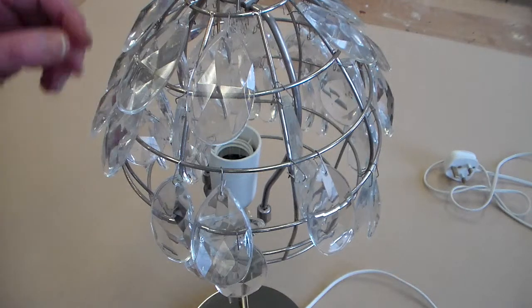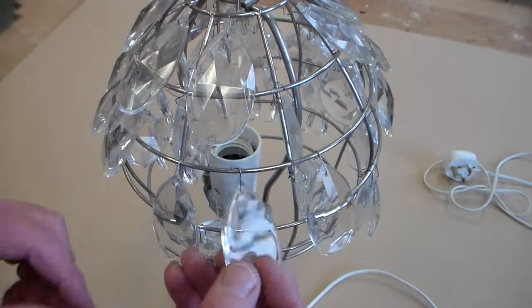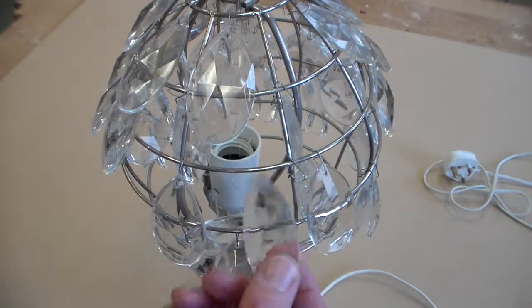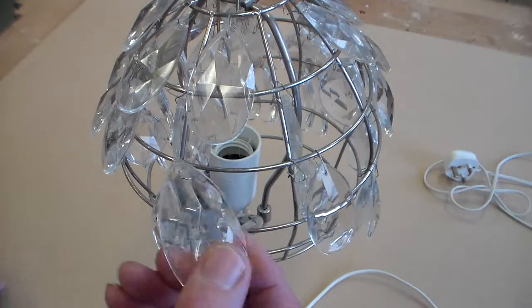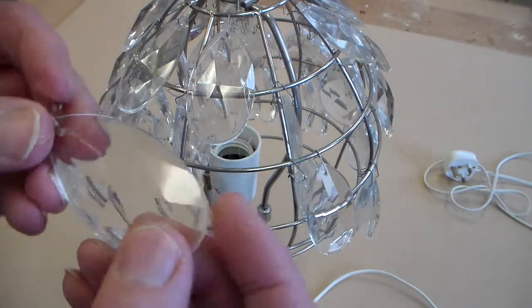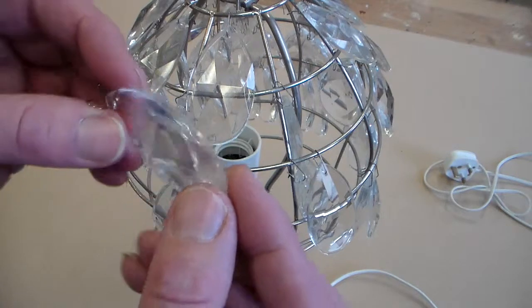So if we look at this IKEA lamp, it's quite a modern styled lamp. It has some acrylic features on here that if we look at them we can see there's a line around the edge here. So these have been injection moulded,